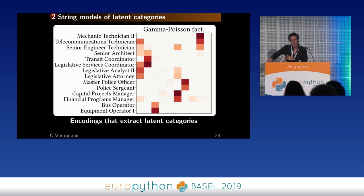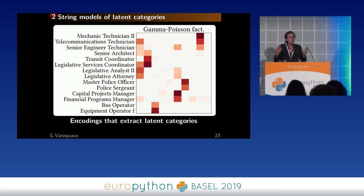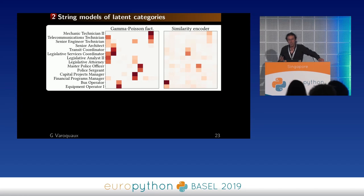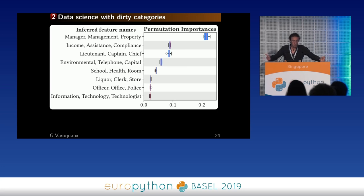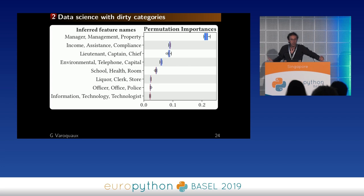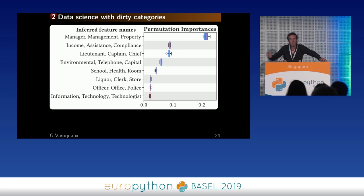We use a heuristic to give names to those columns: the three words most represented in each column. This is useful because it gives you feature names — we're encoding with interpretable feature names. Compared to a similarity encoder, the representation is much more interpretable. We can do interpretable data science: for instance, looking at permutation importances of gradient-boosted trees with the categories inferred from the data. From this messy data, we've inferred latent categories that make sense, on which we can do analysis and present it. And it also predicts well — as we show in the paper, it gives good prediction. So you don't have to clean your data anymore.